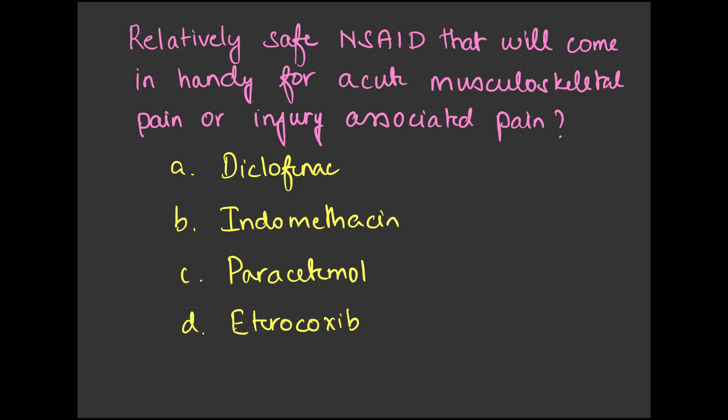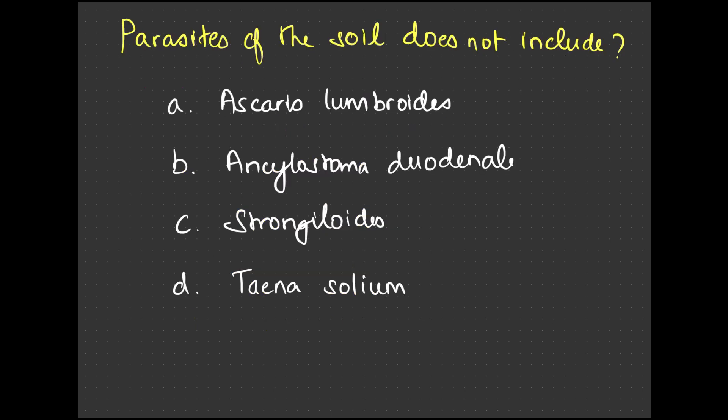For pain from an injury, which painkiller is relatively safe — diclofenac, indomethacin, paracetamol, or etoricoxib? It is paracetamol. Diclofenac is effective but can cause blood clots; indomethacin can cause gastric irritation; and etoricoxib is a selective COX-2 inhibitor but can also cause blood clots and raise blood pressure.